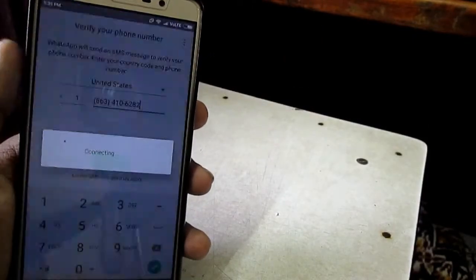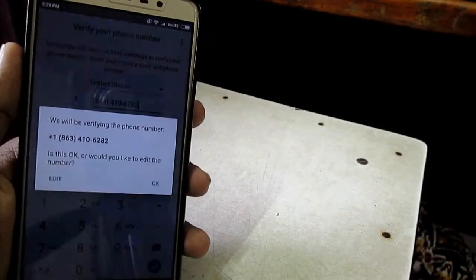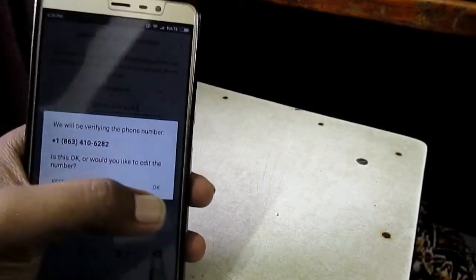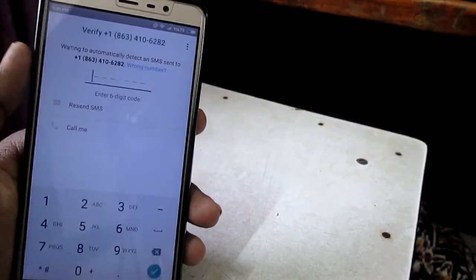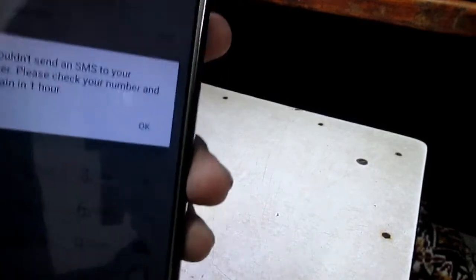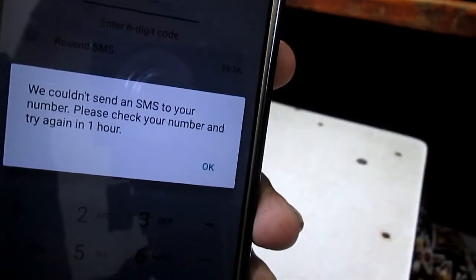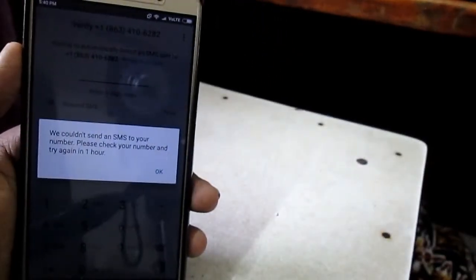So now open WhatsApp and enter that number and click next. Now it will show you an error that they can't send you SMS for verification. Just use the call verification.